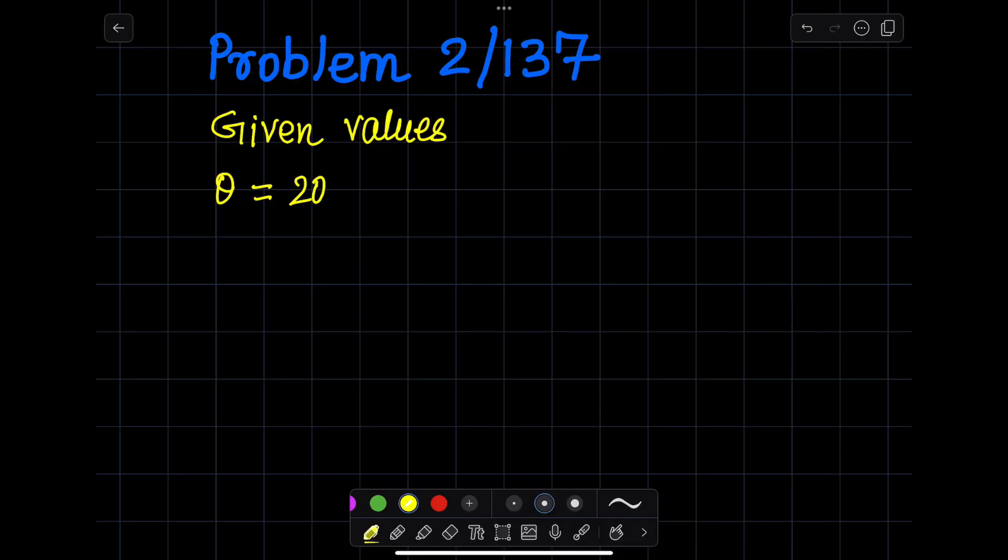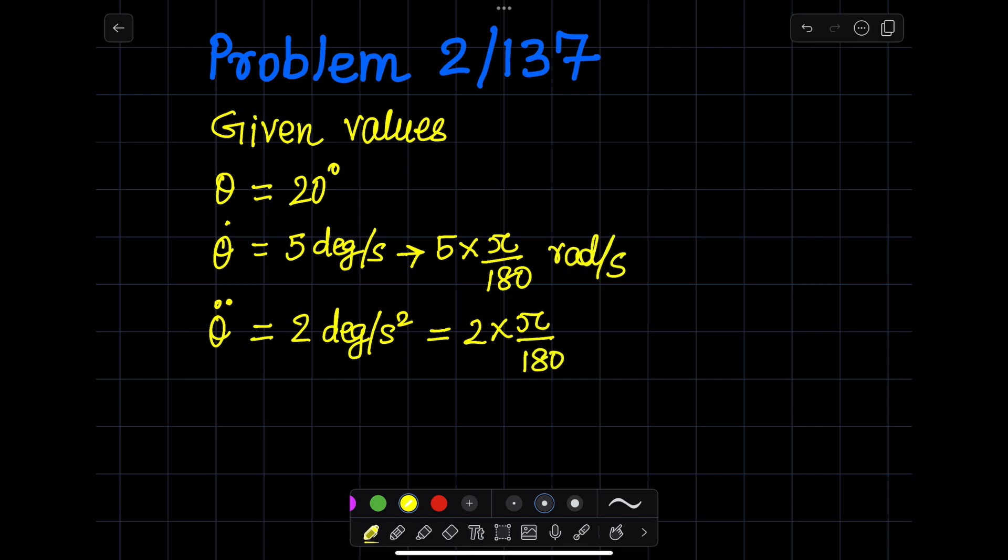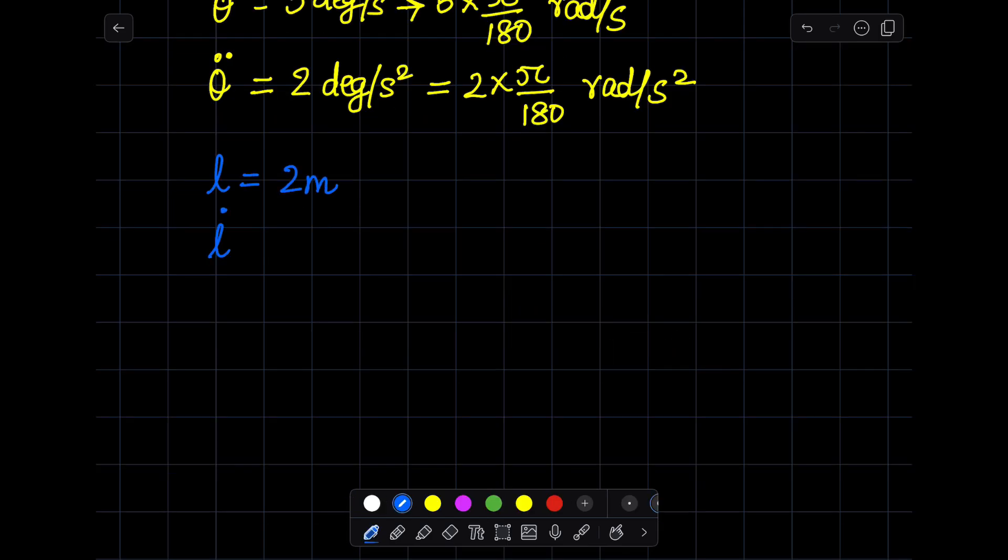Bismillah, in this problem the derivative of r and theta are given and you can see it is shown on the screen. Don't forget to convert degrees per second into radians per second and degrees per second squared into radians per second squared.